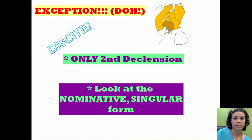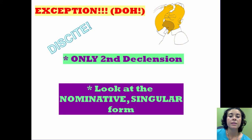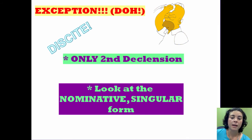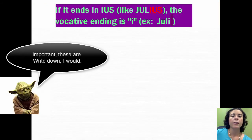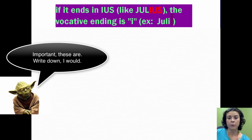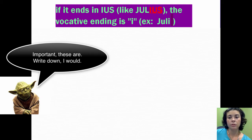Discete. We have an exception in Latin which only occurs in the second declension for vocative, which of course we're learning right now. The way you figure out this exception is by looking at the nominative singular form. If the word ends in I-U-S, for example Julius, the vocative ending is I — for example, Juli.